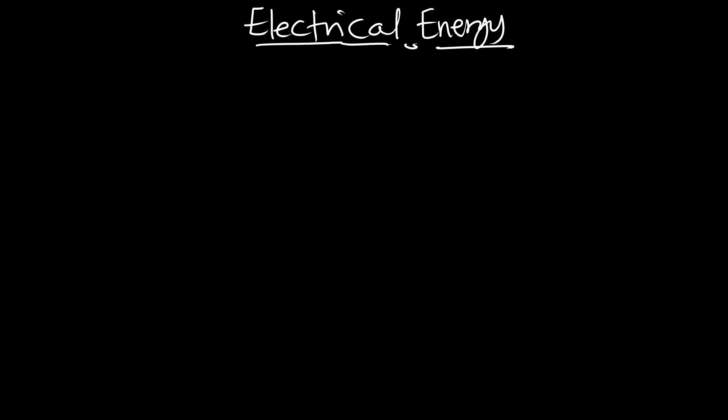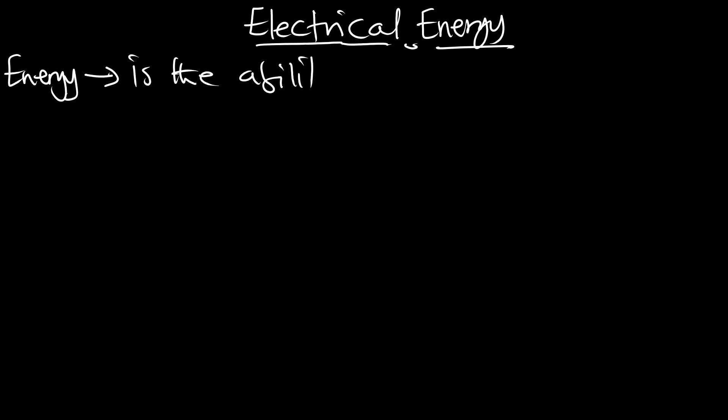In this episode, we are going to talk about electrical energy. In our previous episode, we talked about electrical power, and now we are talking about electrical energy. First, we have to know what energy is. We know that energy is the ability to do work. So we are going to look at the electrical energy — giving it the ability to do work for us in our electrical circuit. This energy is going to produce the work for us.